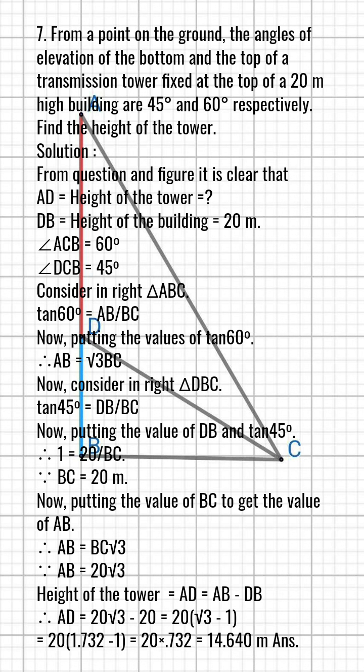Now putting the value of BC to get the value of AB: AB equals BC times square root 3, so AB equals 20 square root 3. Height of the tower equals AD equals AB minus DB. AD equals 20√3 minus 20 equals 20(√3 minus 1) equals 20 times 0.732 equals 14.64 meters.